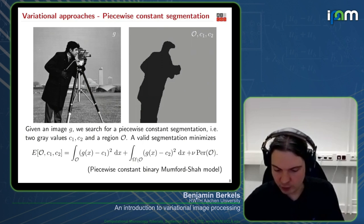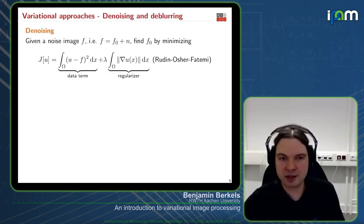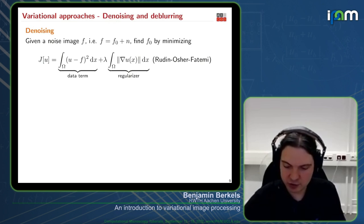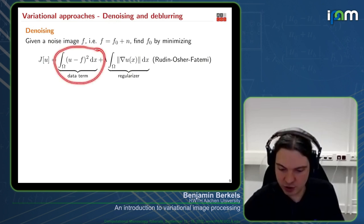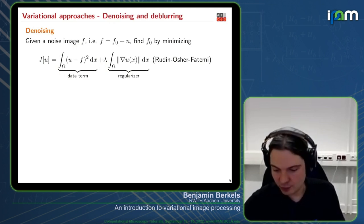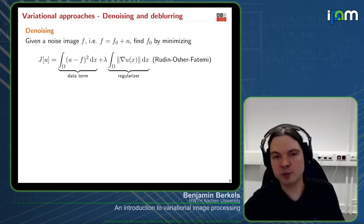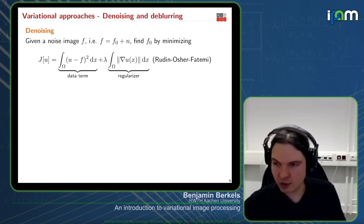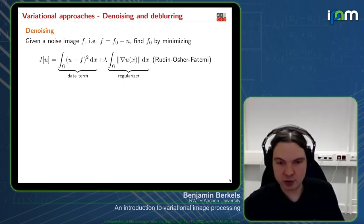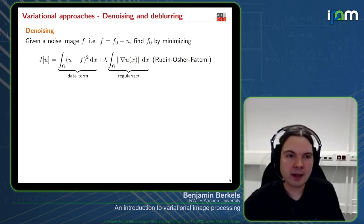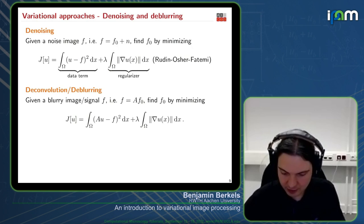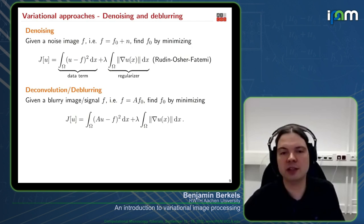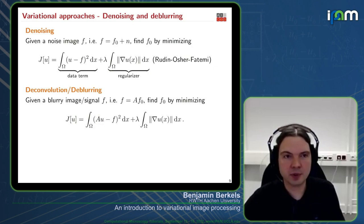Coming back to image denoising: the same strategy applies. We construct a simple data term — we want the denoised image to be close to the input — and we want it to be smooth in some sense. This gives the famous ROF model, which is a very good starting point and we'll look at it later in more detail. Similarly, you can solve the de-blurring problem by adding your forward operator into the data term, performing de-convolution as part of the minimization.